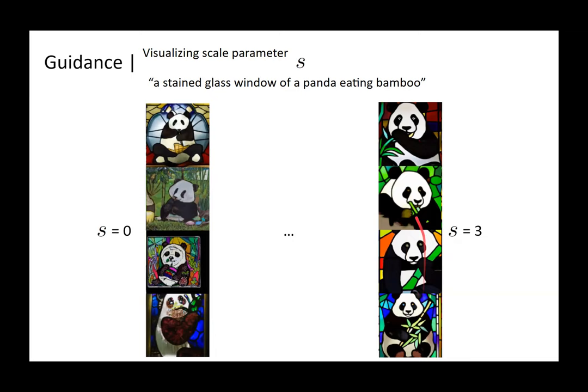So there's a diversity vs. photorealism trade-off controlled by s. When s was zero there was more diversity. This covers guidance. Now moving on to evaluation metrics.